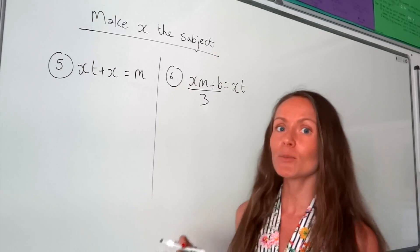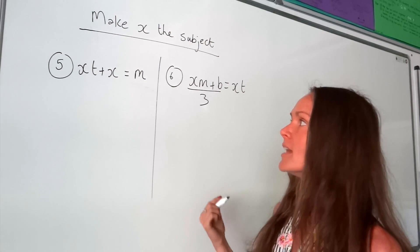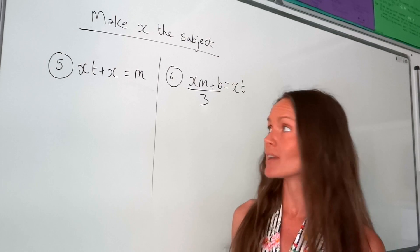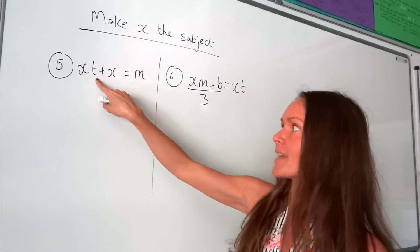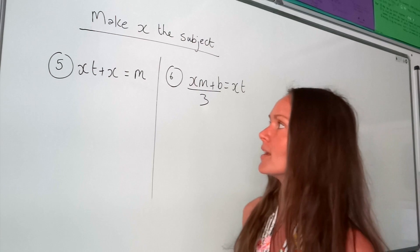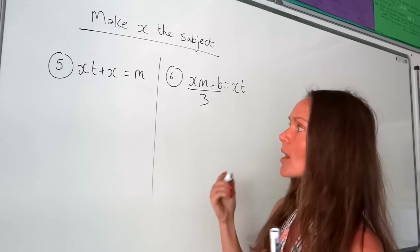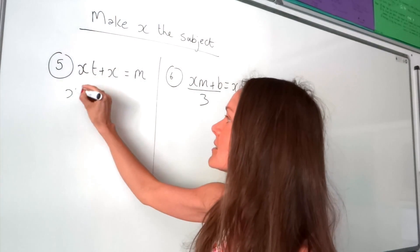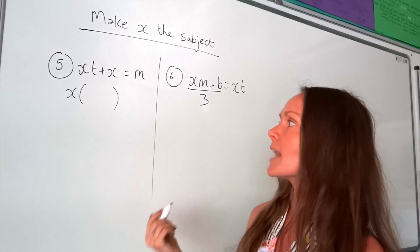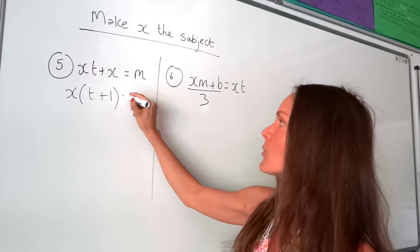Let's make them a bit harder. In these last two examples, I'm still making x the subject, but there's a slight problem because there is more than one x term. In number 5, we've got one x term and also another one. We're going to struggle getting x by itself — if I divide by t, it gets rid of the t on one, but then I'll end up with a divide by t for the other x, which doesn't help. So the only thing you can do when you've got more than one x term is factorize. I'm going to take out my common factor, which is x, and open the brackets. Inside the brackets I should have t plus 1, because x times t is xt and x times 1 is just x.